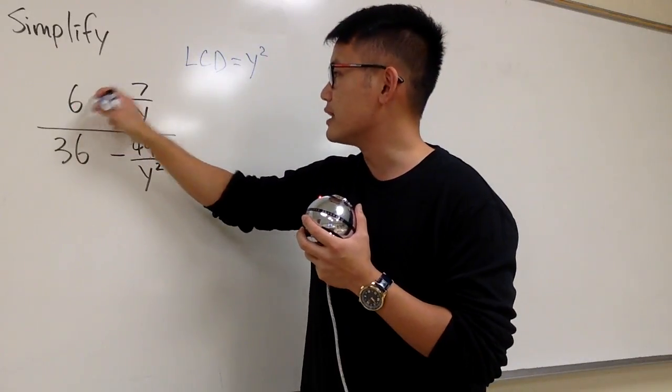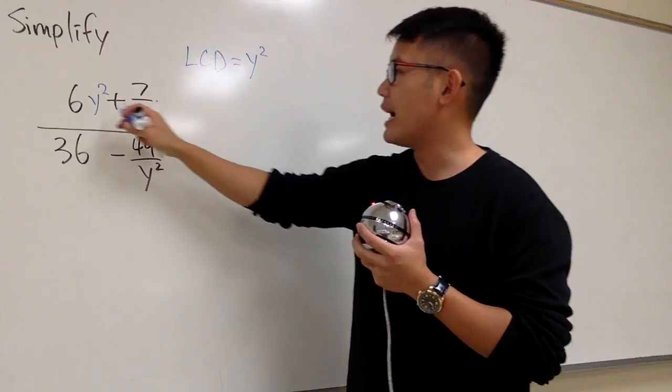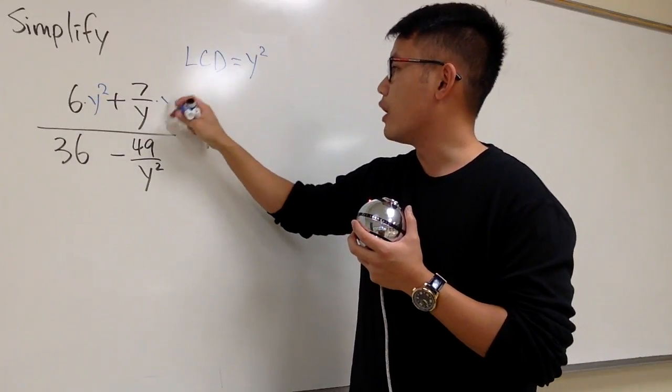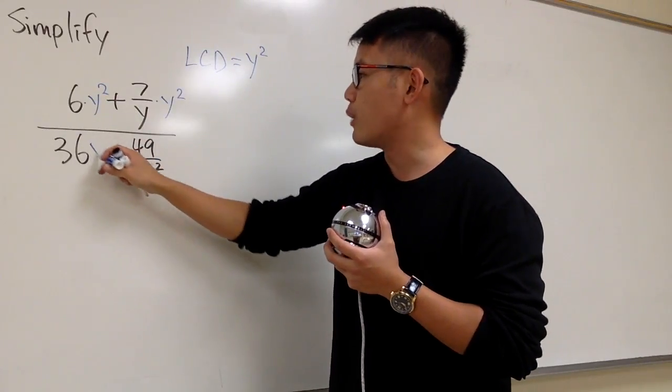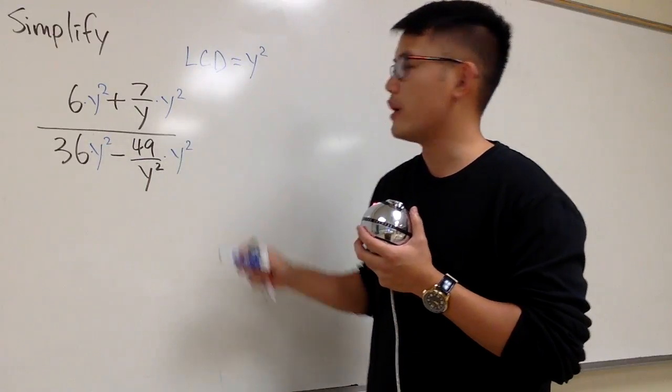Right here, I'm going to multiply the 6 with this, y squared. And I will multiply this by y squared as well. And then I'll multiply this by y squared. And then I'll multiply this by y squared.